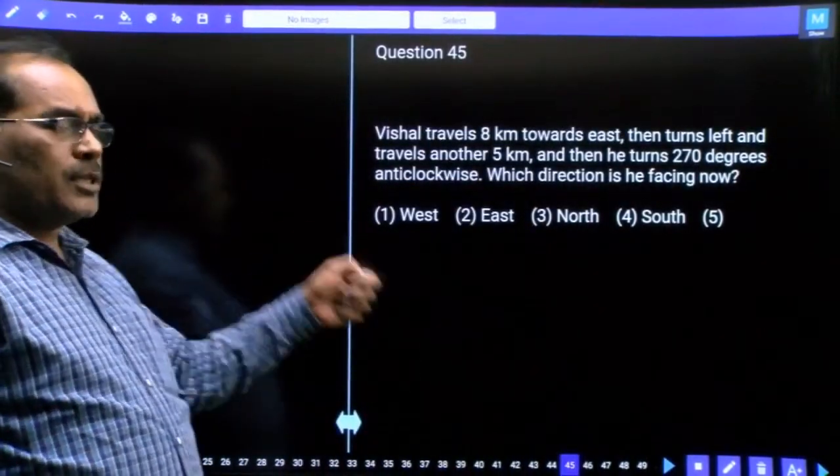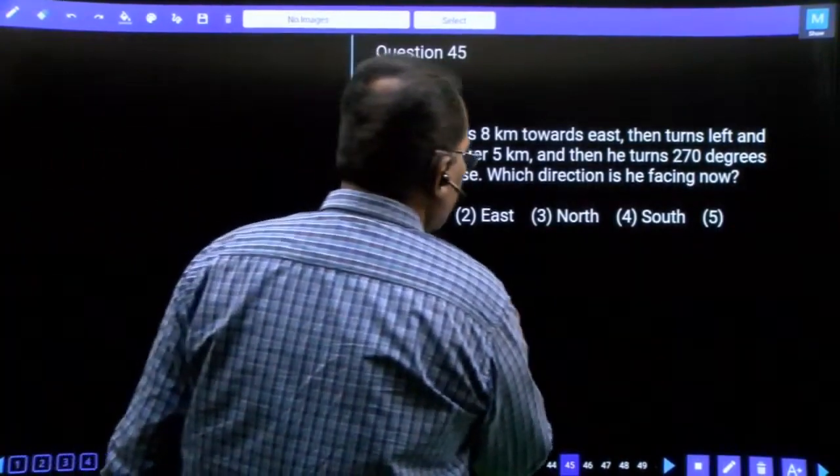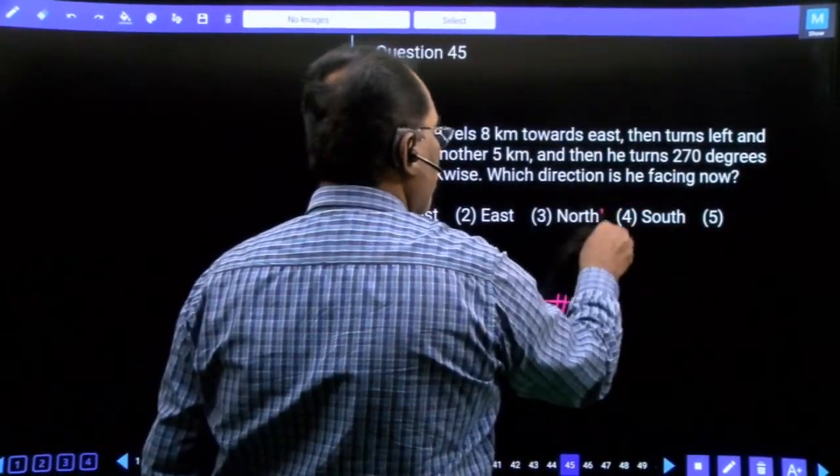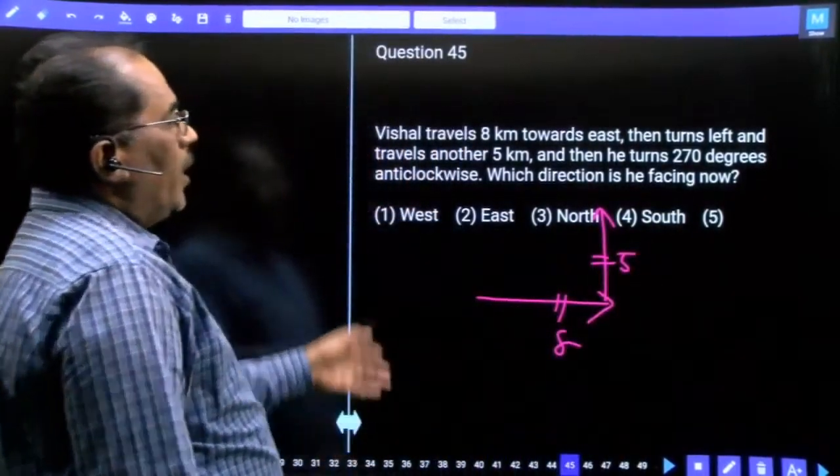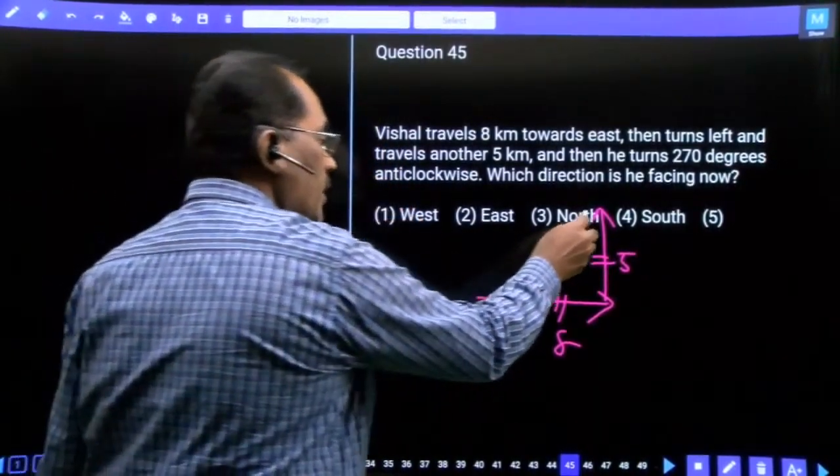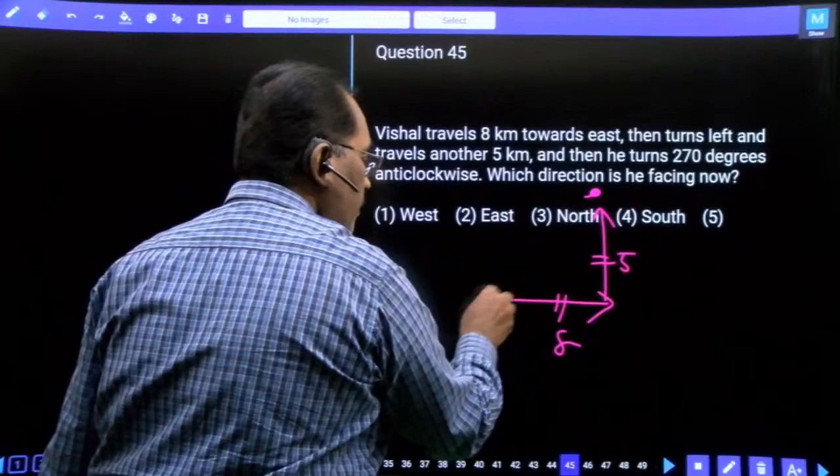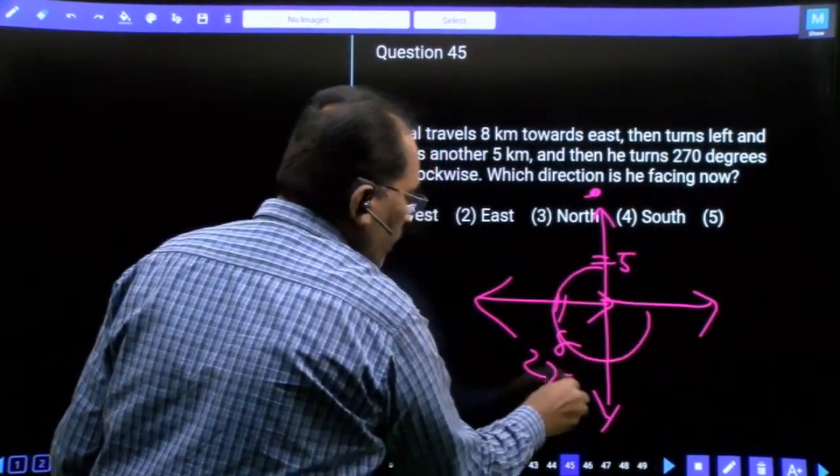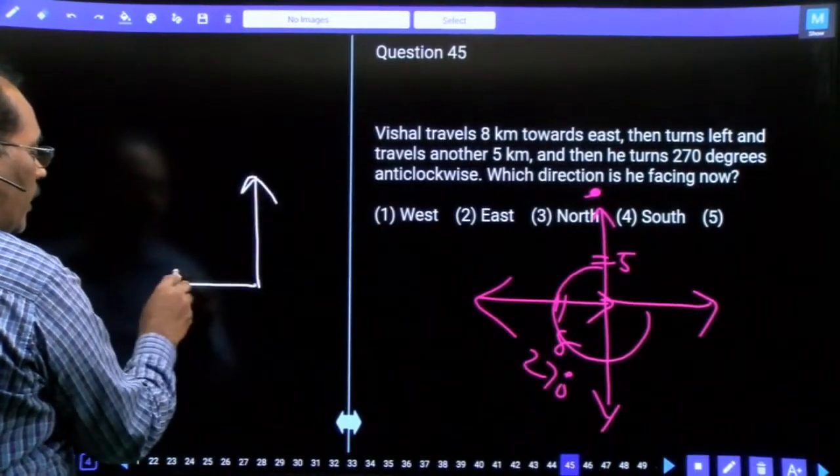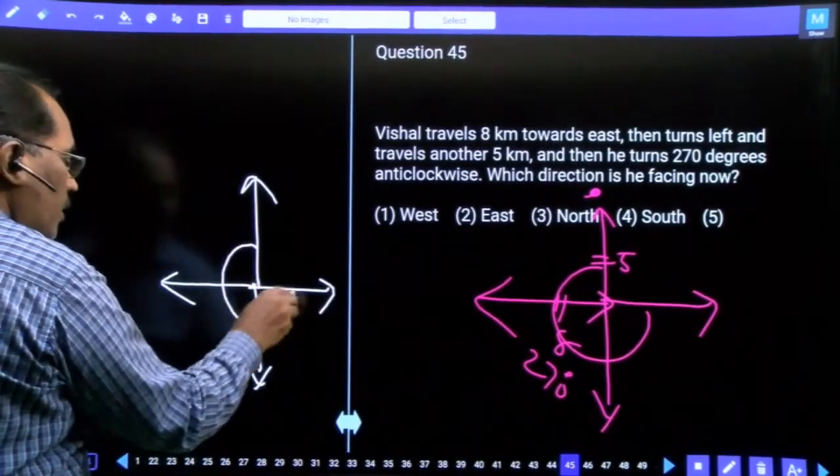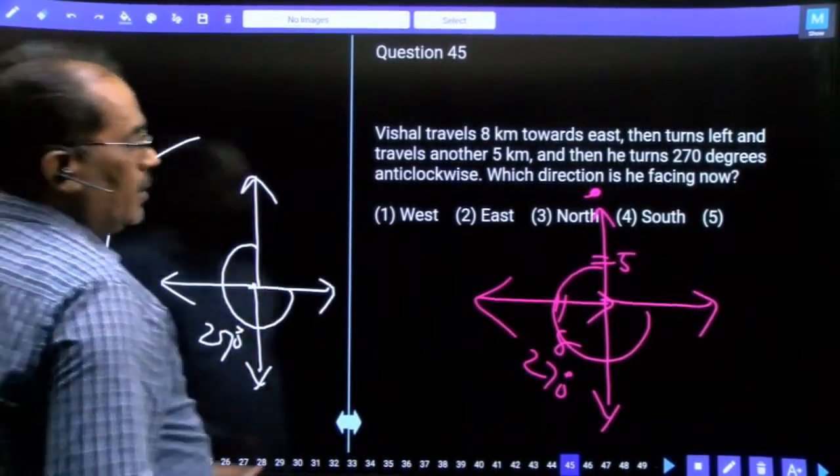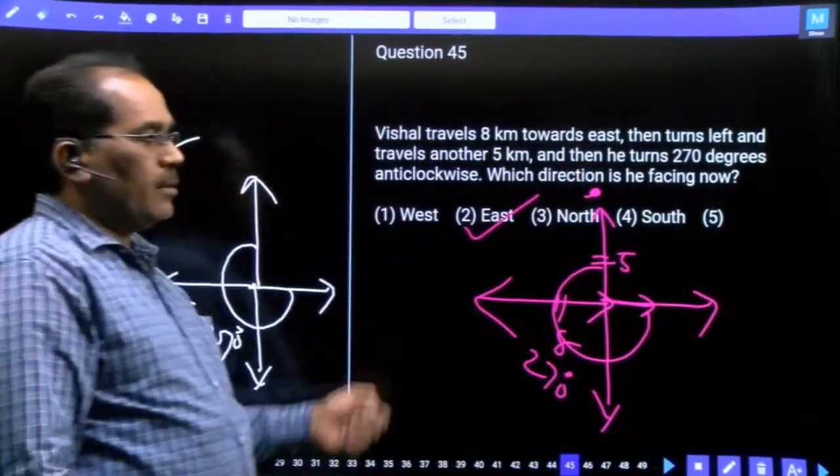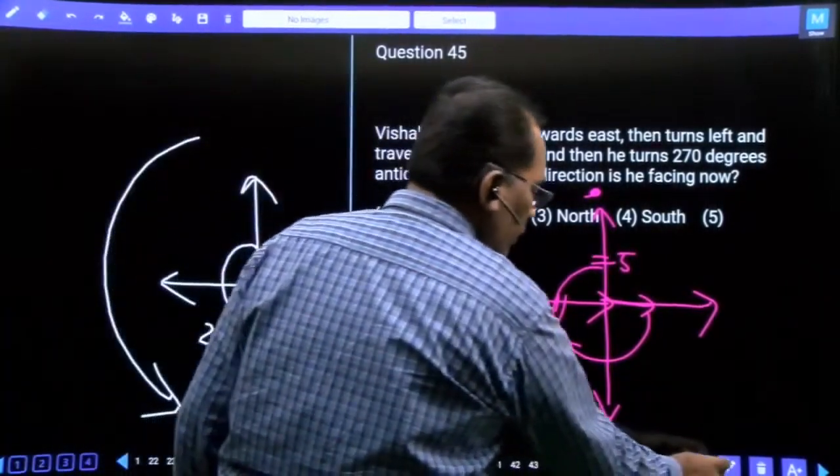Question 45, this is direction based. Vishal travels eight kilometers towards east, then turns left and travels another five kilometers. Left is anticlockwise direction. Then he turns 270 degrees in the anticlockwise direction. Which direction is he facing now? Yes, our answer is east.